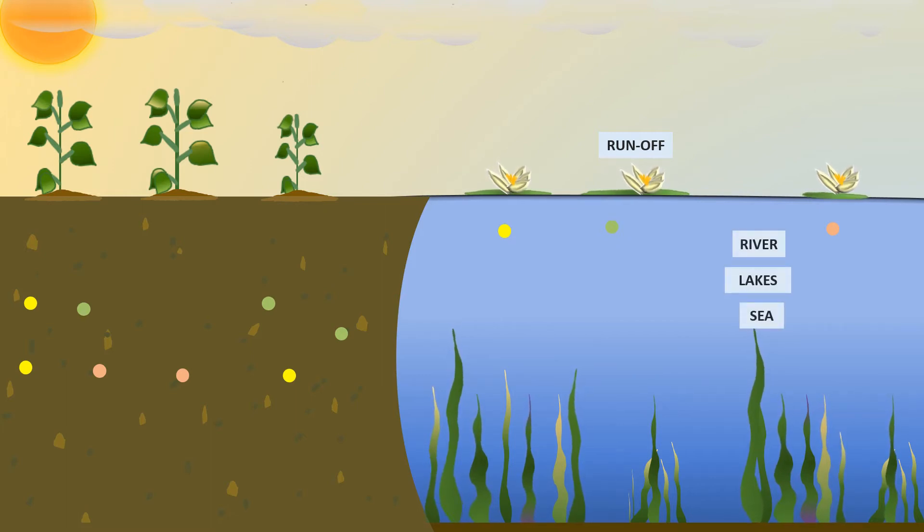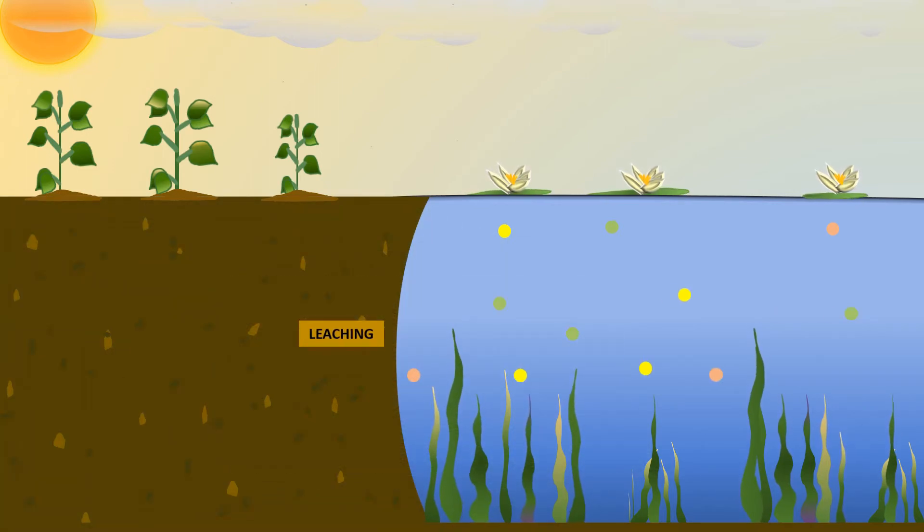When the soil is filled with all the water it can hold, leaching may occur, whereby the water begins to leak, carrying soluble nutrients into these bodies of water.